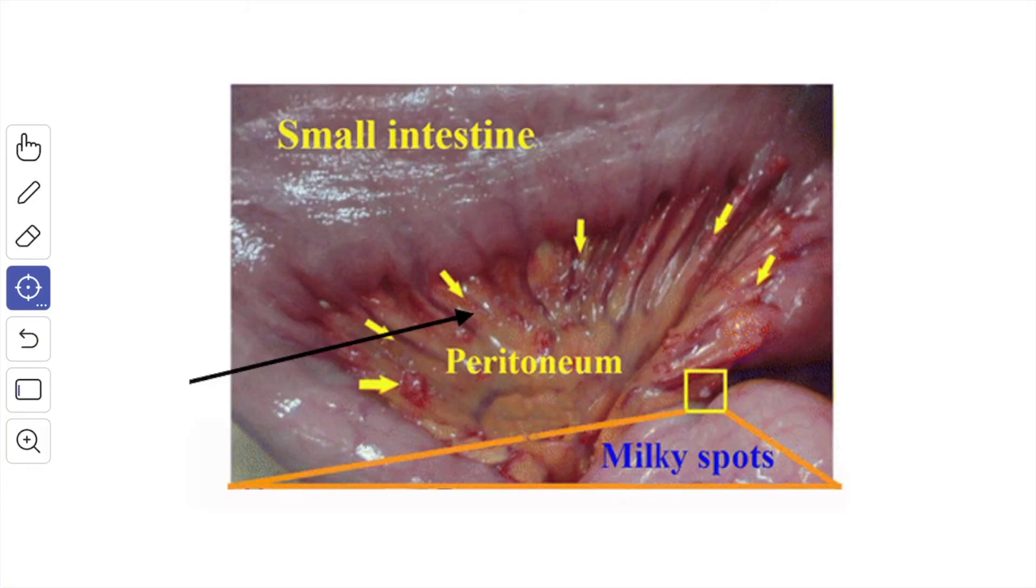The macrophages often form aggregations in relation to the pleura and the peritoneum. They are seen as milky spots. So here you can see the white spot. The macrophage aggregation forms the milky spots.